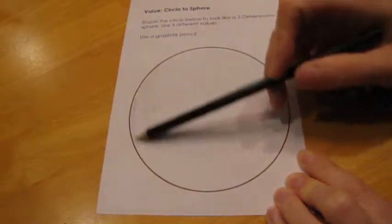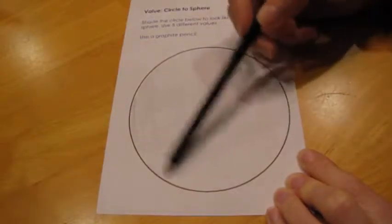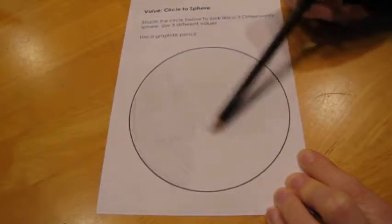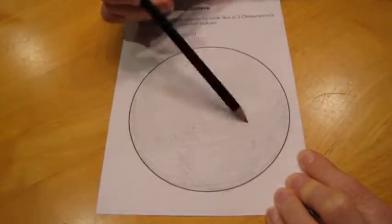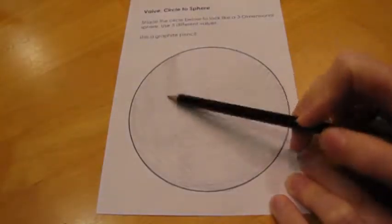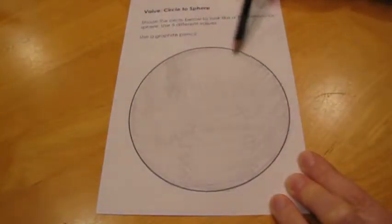Now that you have all of your value scales completed, you are ready to put your knowledge to practice. Your goal is to make your circle look more like a three-dimensional sphere by adding five different values that range from light to dark.